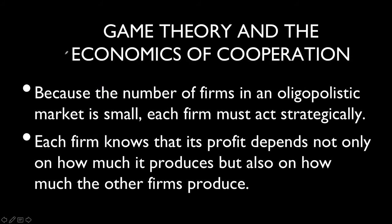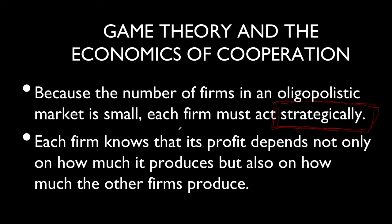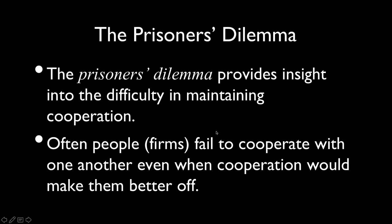Because the number of firms in an oligopoly is small, each firm has to act strategically. They can't just think about what their own actions are going to be — they have to consider what their competitors are going to do, because each firm knows its profits depend not just on how much they produce but also on how much their competitors produce. There's a very simple strategic game called The Prisoner's Dilemma that demonstrates how this works.